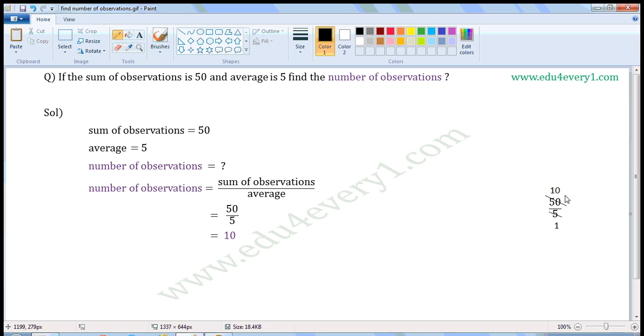The values left are 10 divided by 1, which is equal to 10. So, the number of observations is equal to 10.